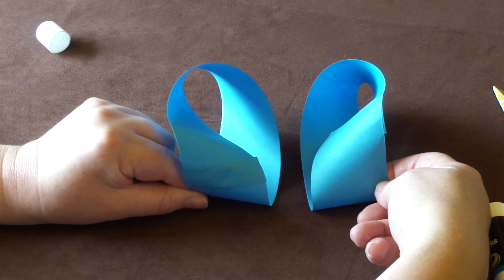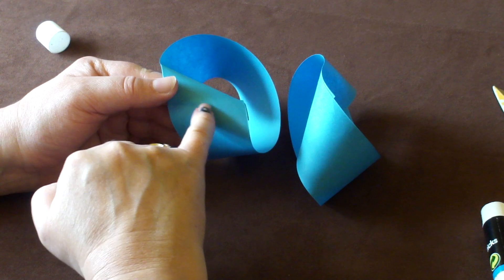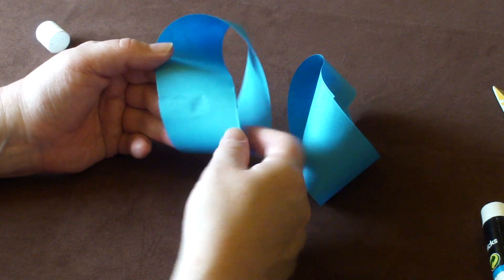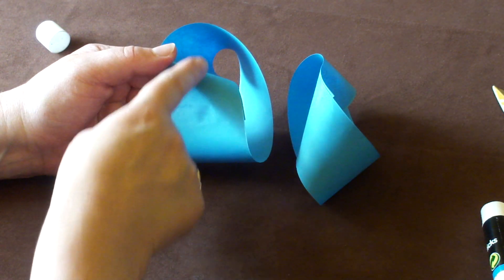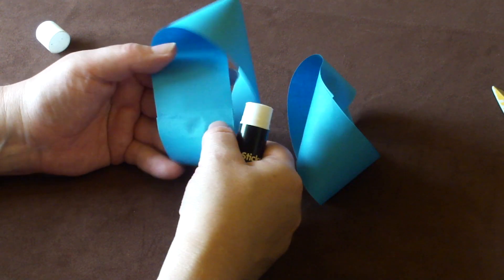You can see those are mirror images. Now I'm going to glue them together, and it doesn't matter where you glue them, but I tend to do it on the join here. And I'm going to glue them so that one of them's got the paper going vertically, and the other one has it going sideways. So they're going to be glued in a cross shape.